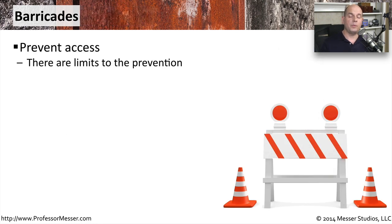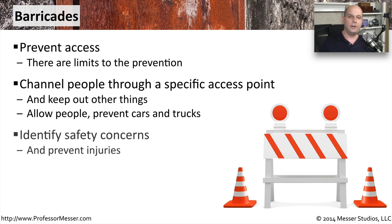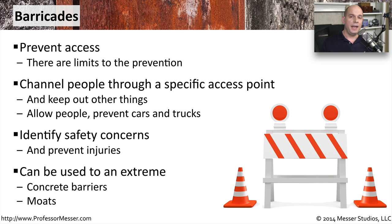Barricades can keep people from going into or out of a particular location. While there are limits to what a barricade can do, it makes people aware of restricted sections and channels movement through specific points. Barricades can keep cars or trucks out while still allowing people to pass through. It's common to see barriers around industrial equipment, air conditioning systems, or water systems to keep people away from dangerous equipment. Concrete barriers can stop vehicles from entering a building, and in very large data centers, a physical moat may separate the facility with only a single road in and out.